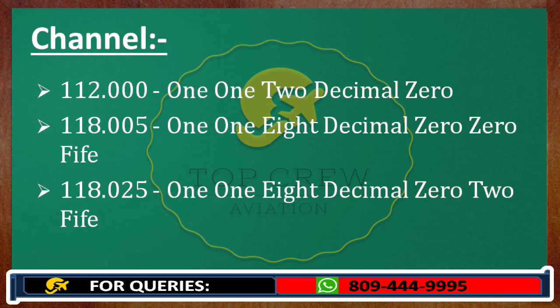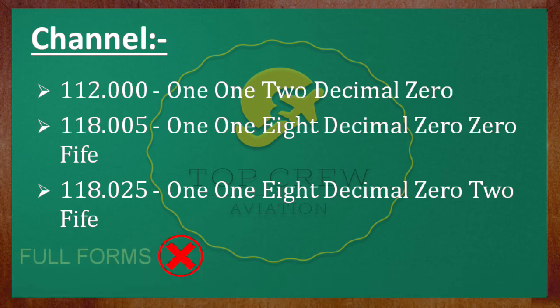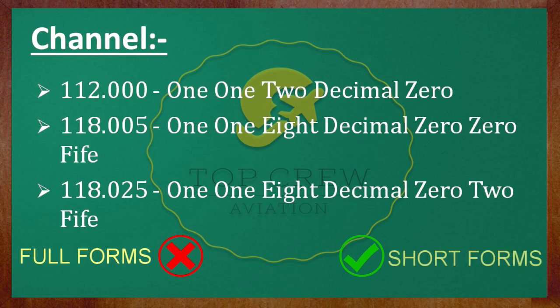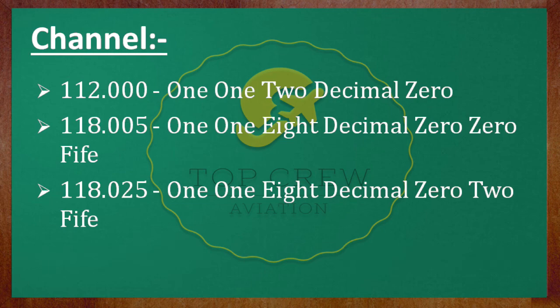So guys, I tried to write it as-is — we need to transmit using short forms as much as we can, because we would never use full forms of anything in RT. It will help you to write faster and complete your part one exam within the limited time so that you can qualify. This is how we need to write as well as transmit all the terms as above. That's it for today, guys. Bye for now.